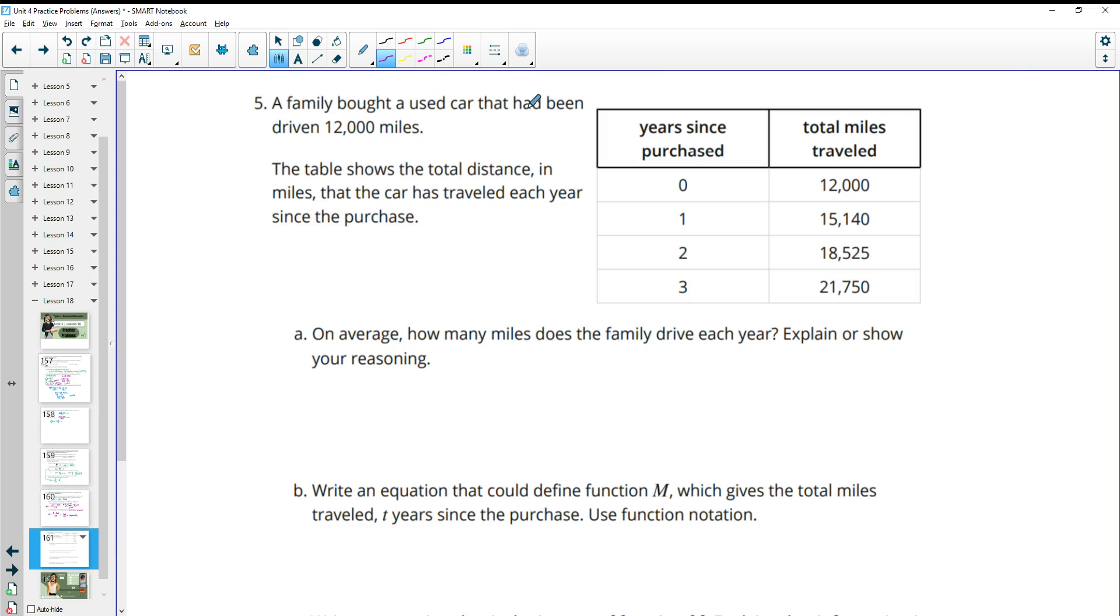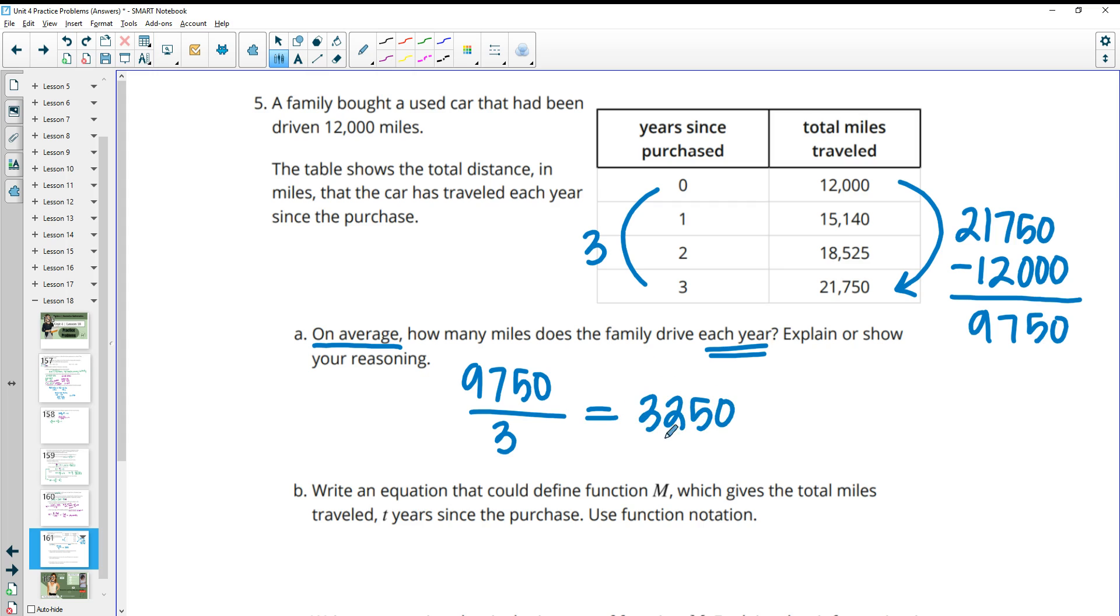Number five, a family bought a used car that had been driven for 12,000 miles. The table shows the total distance in miles that the car has traveled each year since the purchase. On average, how many miles does the family drive each year? So we want to know how much the family drove. We'll do 21,750 minus how much was there when we got the car. And that will tell us how many miles the family has driven it. So if we subtract those, we get that the family has driven it 9,750 miles in three years. So then if we want it per year, we have to divide the amount they've driven by three to find out that they drive about 3,250 miles per year.